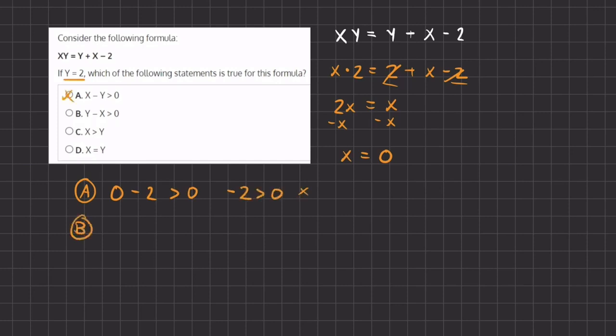Now let's move on to B. We have y, which is 2, minus x, which is 0, is greater than 0. So here we have 2 is greater than 0, which is the correct statement. Therefore, B will be our final answer.